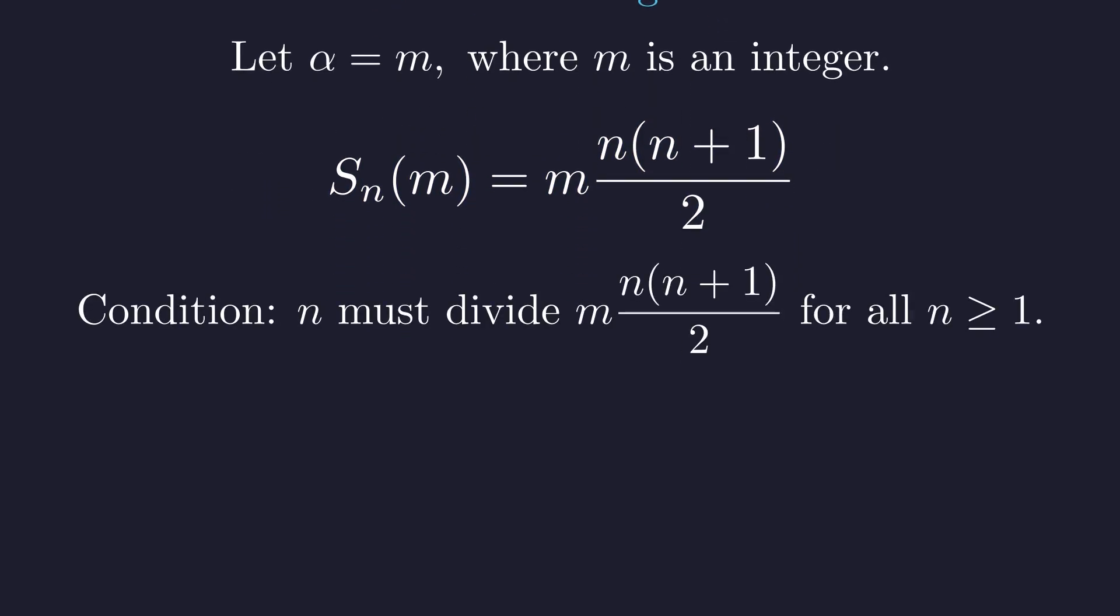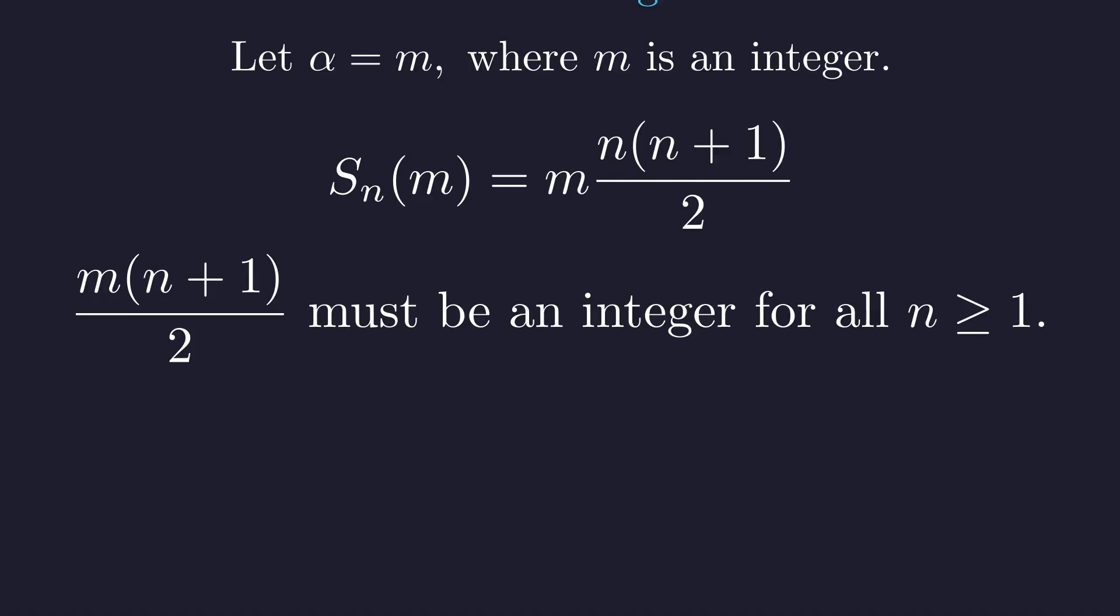This gives us m times the nth triangular number. The problem requires n to divide this expression for all positive integers n. Because n is a positive integer, this divisibility condition is equivalent to the expression without n being an integer. This simplifies the condition. m times n plus 1 divided by 2 must be an integer for all n.